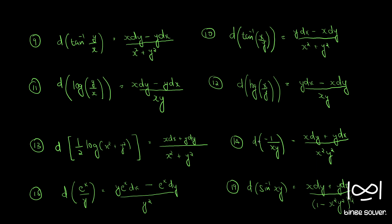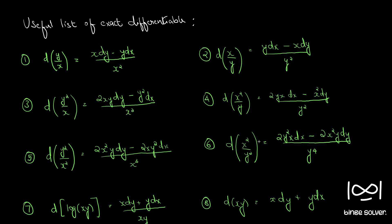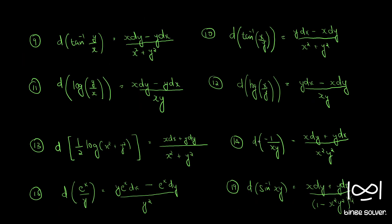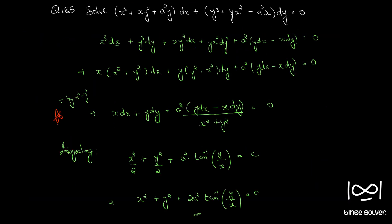Please pause the screen and go through each one if you haven't already — it will come in handy to solve questions. Our question had y dx minus x dy by x square plus y square, which is d of tan inverse y by x. So integrating we get tan inverse y by x. This is the solution to question number 185.